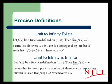Let's just conclude with some precise definitions. When a limit to infinity exists, we have let f of x be a function defined on a to infinity. Then the limit as x goes to infinity of f of x exists and is equal to L.